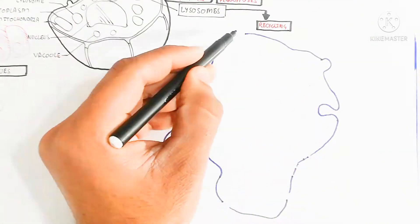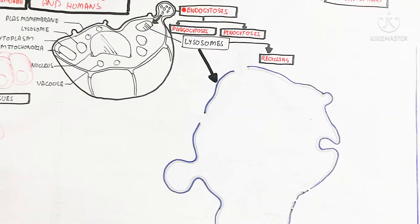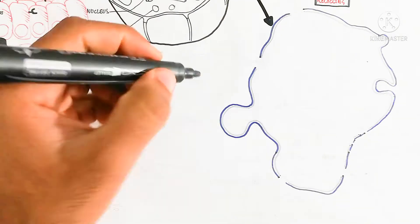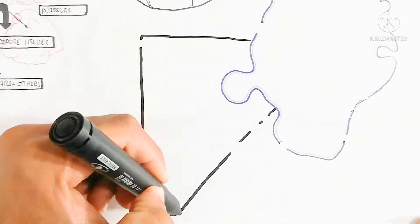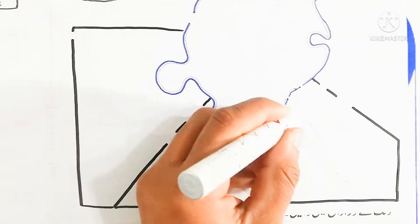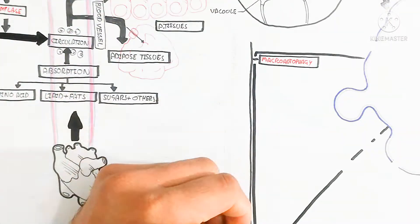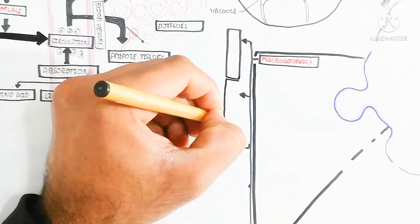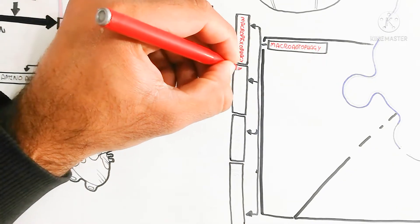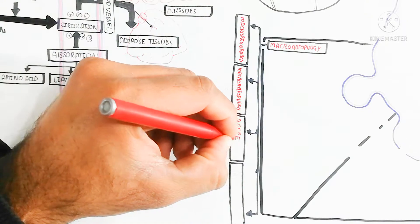Here I am drawing the lysosome for better understanding of the different types of intracellular digestion. This is called intracellular digestion because it occurs inside the cell, as the lysosome is an organelle within the cell. First, we will discuss macroautophagy.